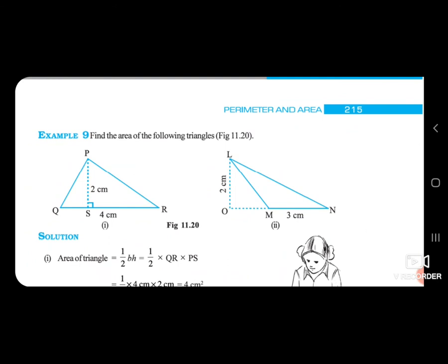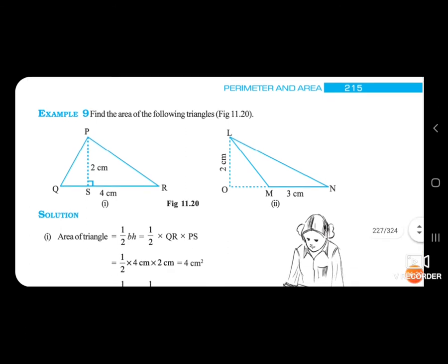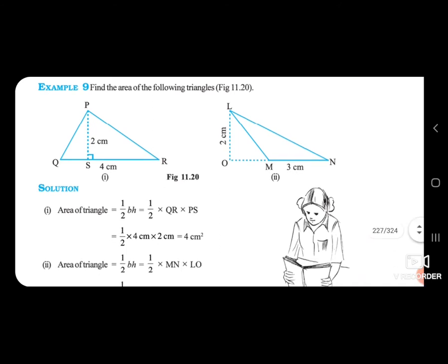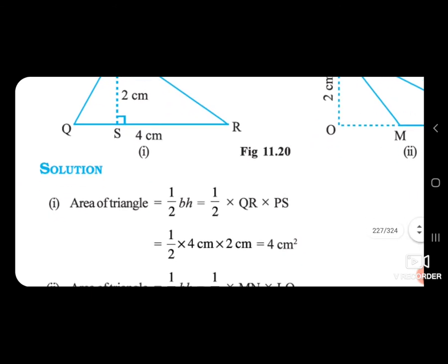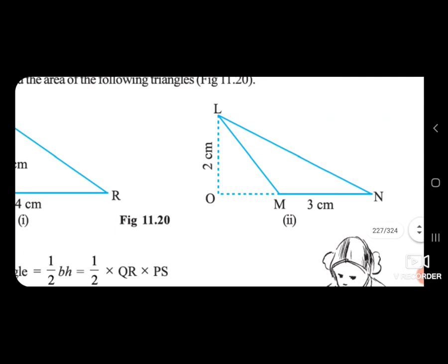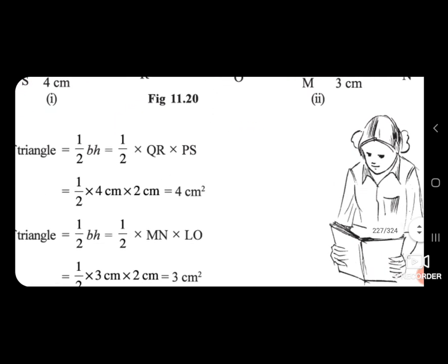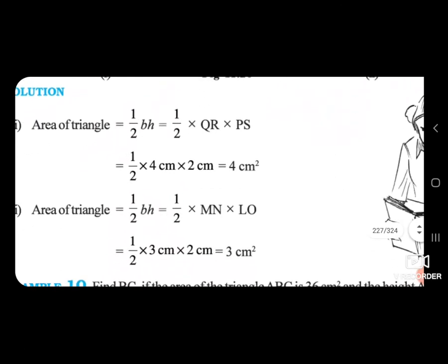Example 9: Find the area of the following triangles from figure 11.20. First triangle: base = 4 cm, height = 2 cm. Area = 1/2 × 4 × 2 = 4 cm square. Second triangle: base = 3 cm, height = 2 cm. Area = 1/2 × 3 × 2 = 3 cm square.